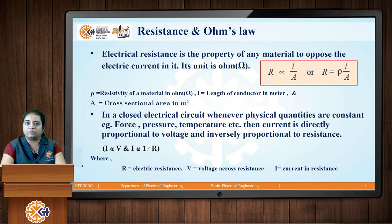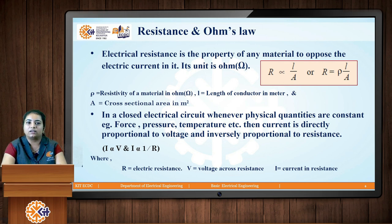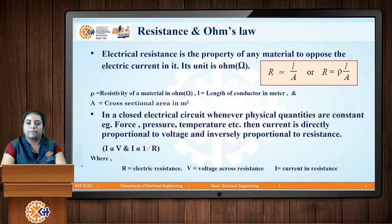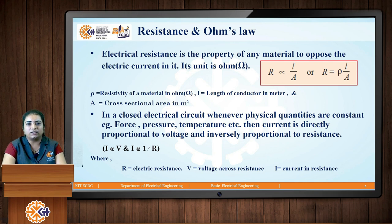What is Ohm's law? According to Ohm's law, in any electrical circuit, when all physical quantities are constant — such as force, pressure, and temperature — the current flowing through a conductor is directly proportional to the voltage and inversely proportional to the resistance of that material. So, I ∝ V and I ∝ 1/R, where R is the electric resistance in ohms, V is the voltage across the resistance, and I is the current flowing through the resistance.